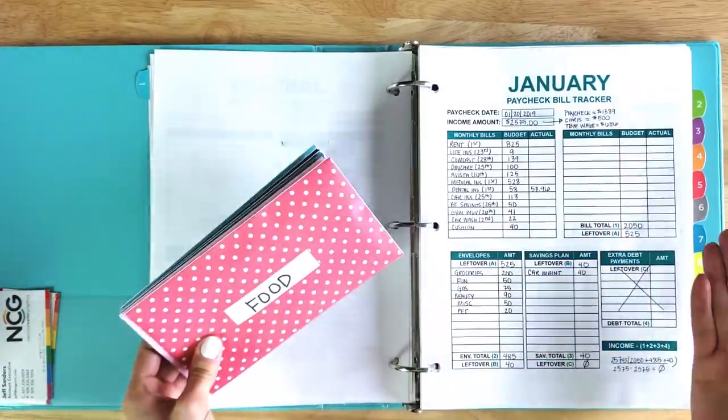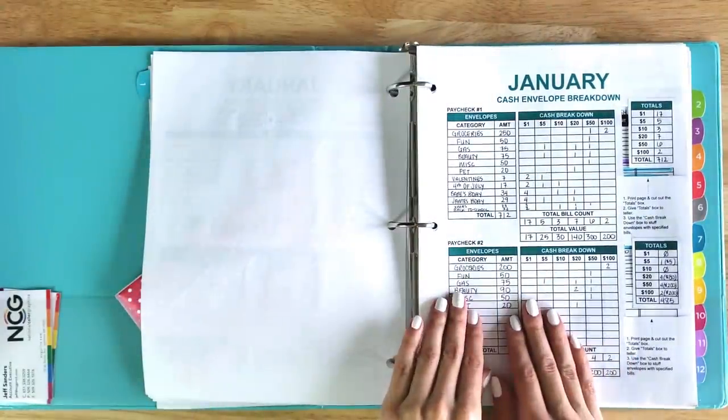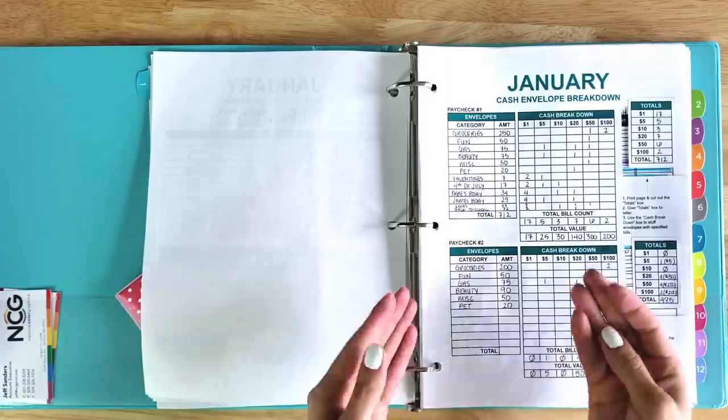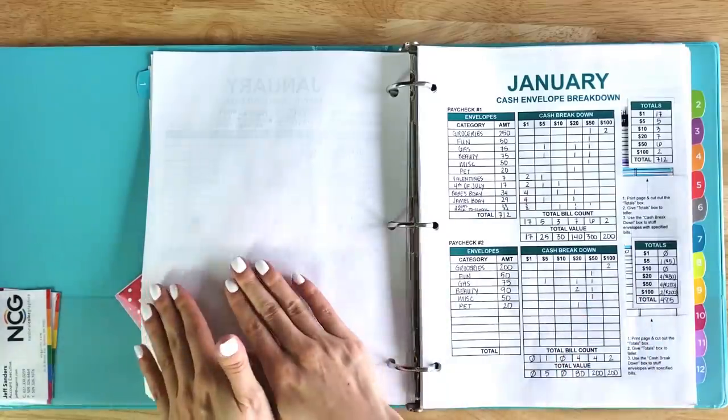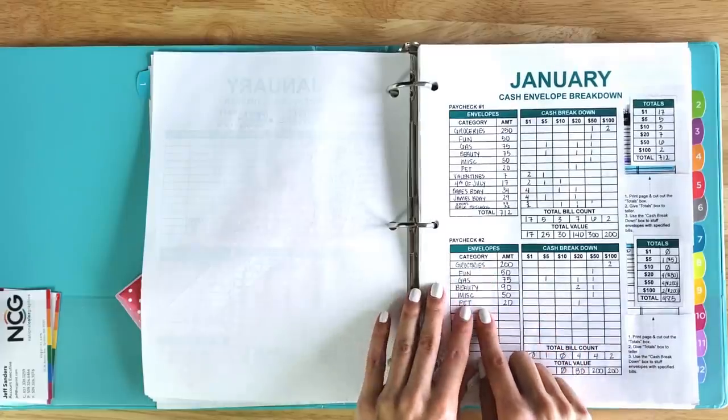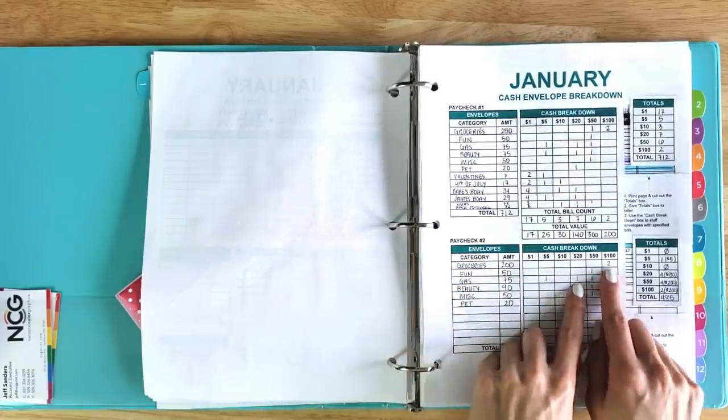On payday, I run to the bank and I use what's called a cash envelope breakdown. This cash envelope breakdown tells me what bills I need to ask from the teller to stuff my cash envelopes. I write down each of my cash envelopes, the amount I need for each envelope.